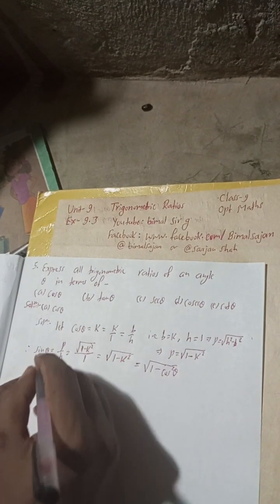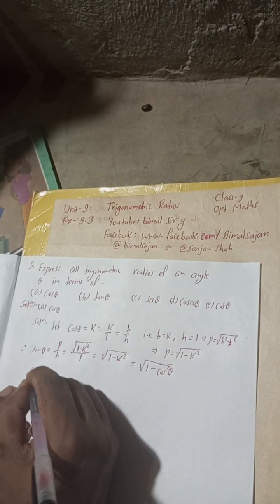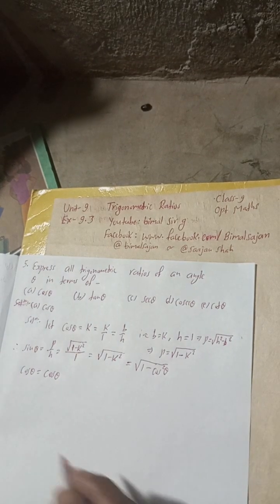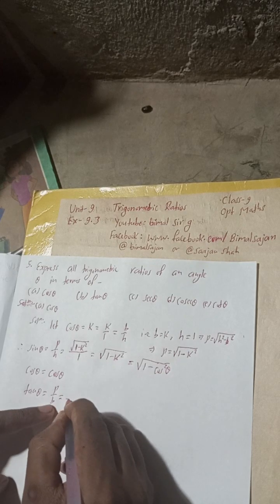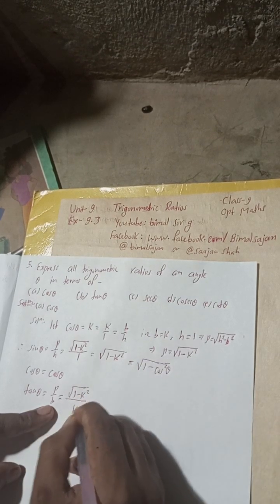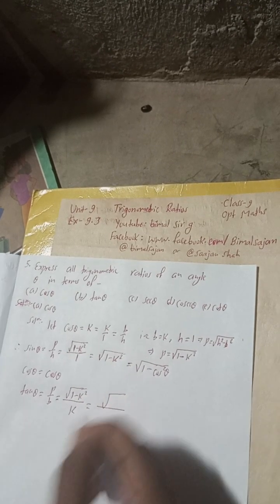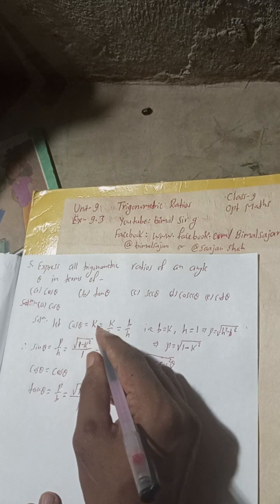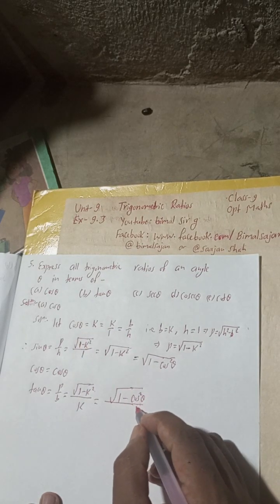In the same way, tan theta = p/b = √(1 − k²) / k. Substituting k = cos theta, tan theta = √(1 − cos²theta) / cos theta.